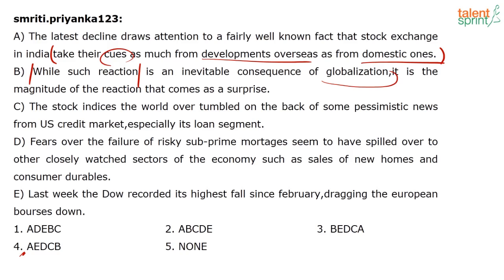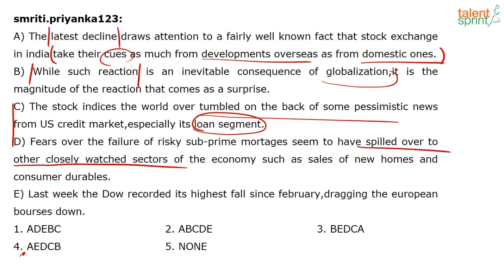Last week, the Dow recorded its highest fall since February, dragging the European bosses down. Here, the stock indices the world over tumbled on the back of some pessimistic news from the US credit market, especially its loan segment. Fears over the failure of risky subprime mortgages seem to have spilled over to other closely watched sectors. So, C and D is a link — because C talks about and expands on what is not working, the loan segment, and then D has 'other closely watched sectors.' So D has to follow C, and the only option giving me D following C is option 2.